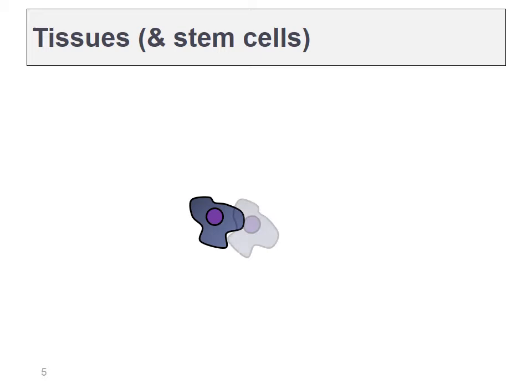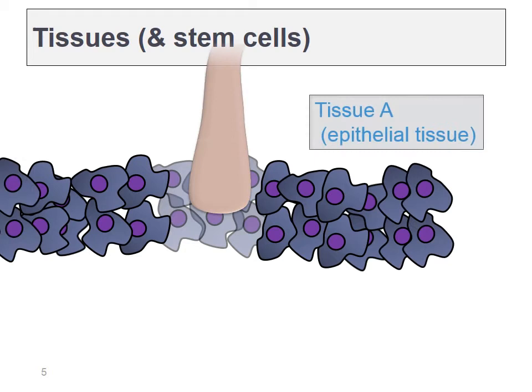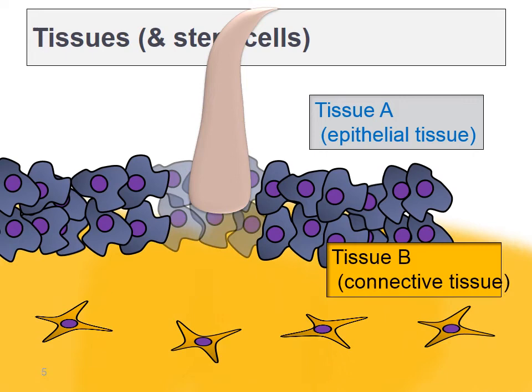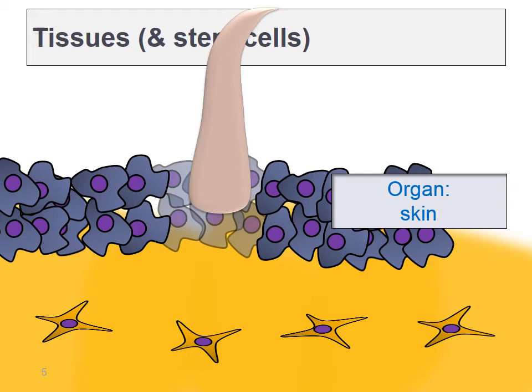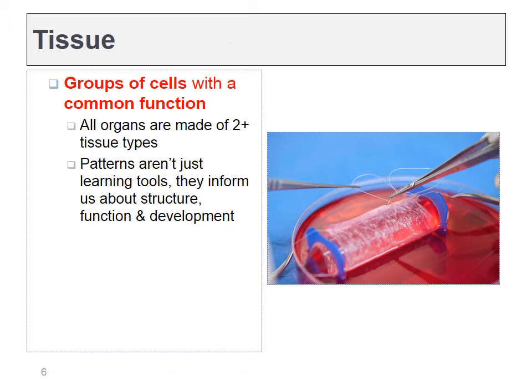An epithelial cell, when it divides, tends to give rise to more epithelial cells, and they stick together forming a tissue. A tissue is one type of cell in a group working together for a common purpose. Not every epithelial cell has to be identical, but they're all epithelial cells. A different tissue below might be a connective tissue made by a different cell type called a fibroblast.